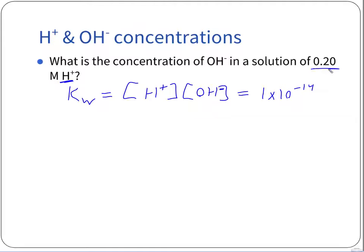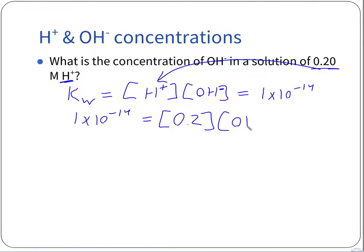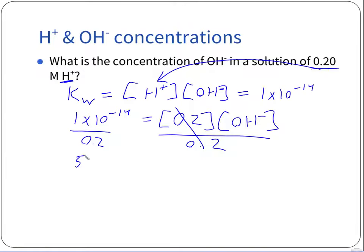We know there's 0.020 molar H⁺, so we put that in for our H⁺ concentration: 1×10⁻¹⁴ = 0.020 times the concentration of hydroxide ions. Dividing both sides by 0.020 — which is one fifth, so multiply by 5 — we get 5×10⁻¹⁴ equal to our concentration of hydroxide ions. The concentration of hydroxide is 5×10⁻¹⁴ molar.